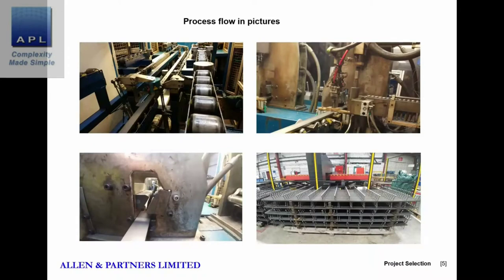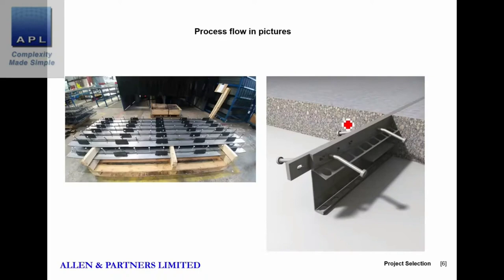Here are some photos of the process working, and here are the finished products — bars with studs welded on. The bars are also bent to shape, so it's a fairly complex automated welding and bending process. The issue is that the welds are failing and the studs are falling off. The product goes into a concrete floor; the studs are part of an expansion joint.